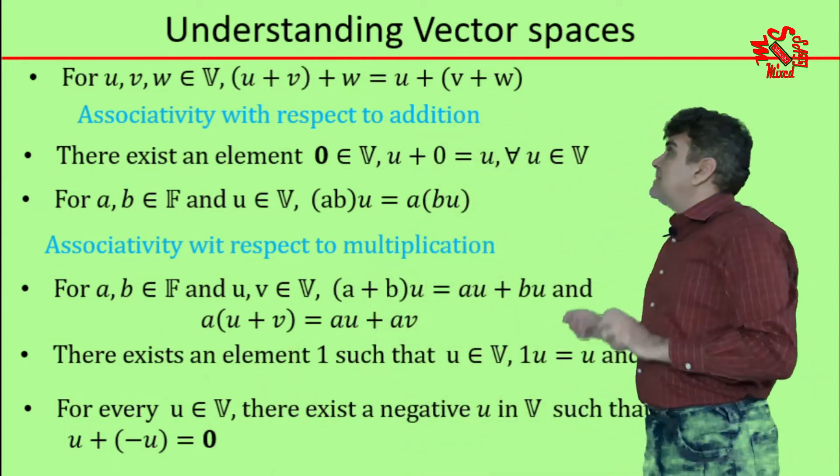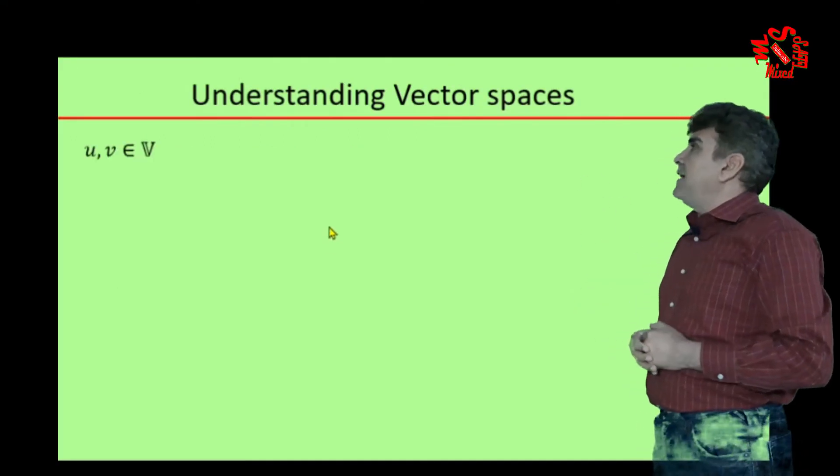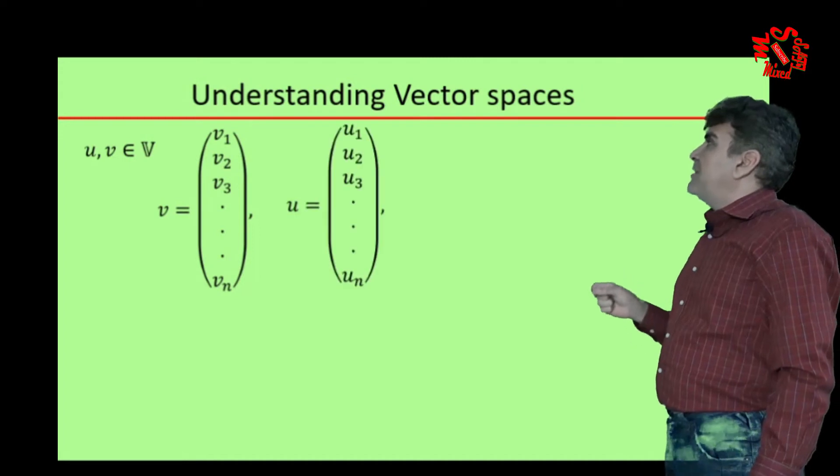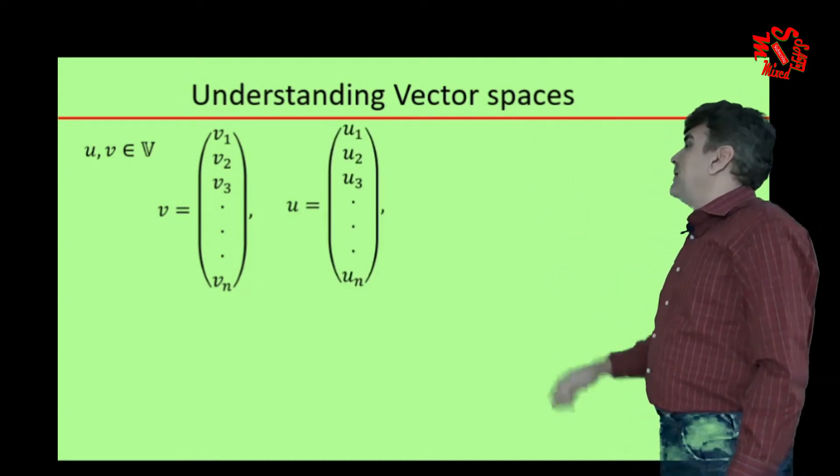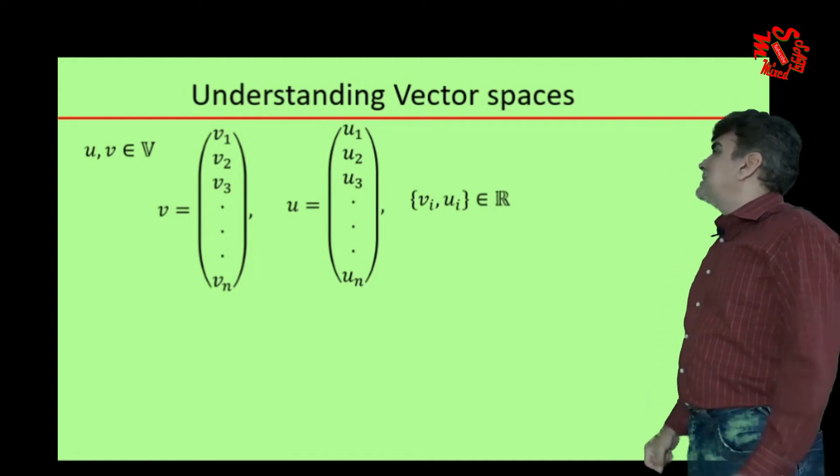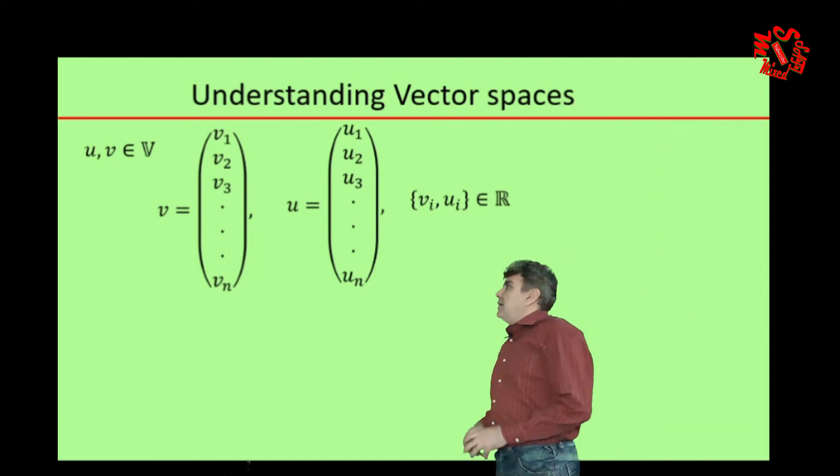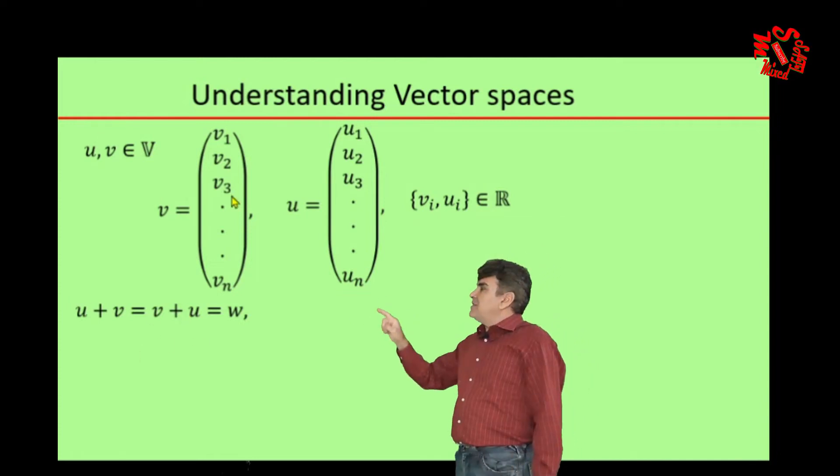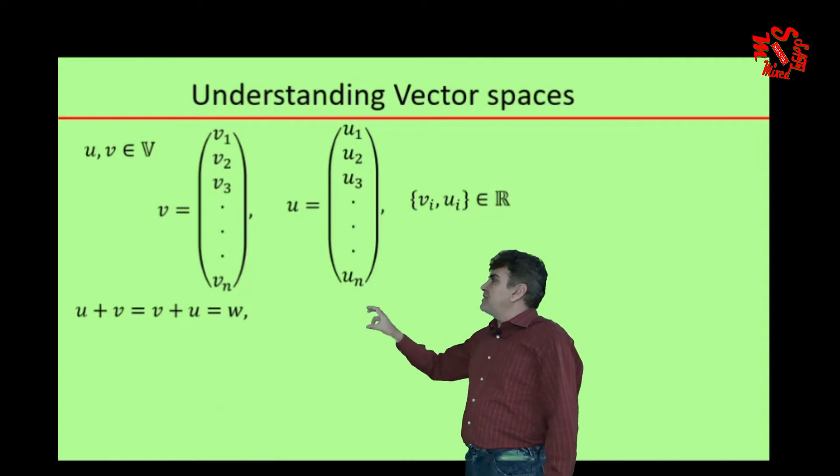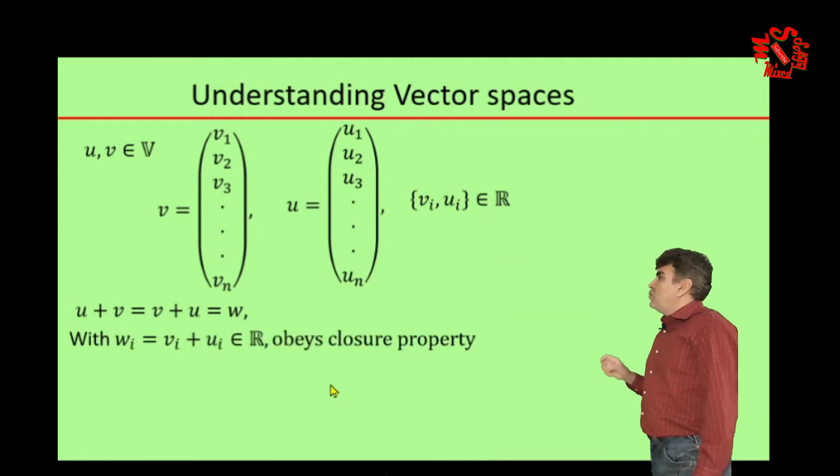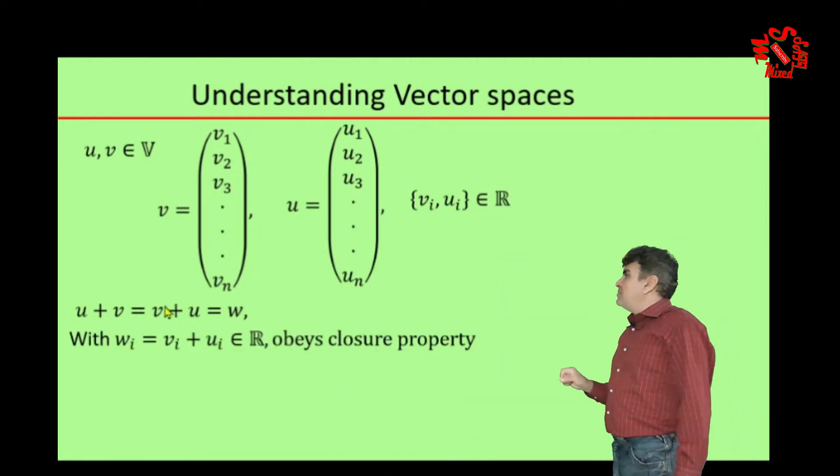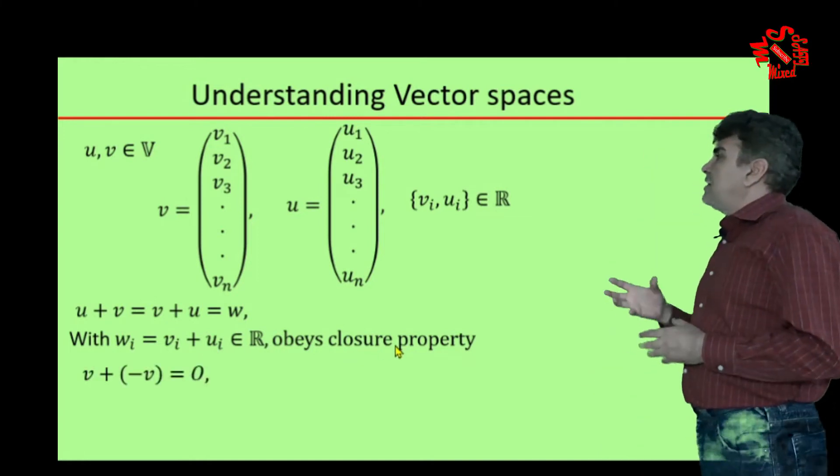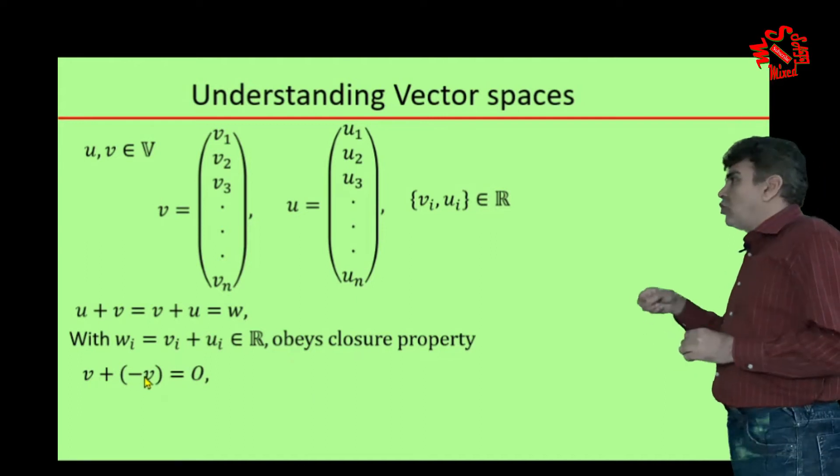And for that purpose, consider that the elements u, v belonging to V are in fact column matrices of n rows with entries v1, v2 up to vn, and similarly u has entries u1, u2 up to un, where ui, vi belong to the set of real numbers R. Now if we take these values of u and v and substitute into this equation u plus v, you can easily prove that it is equal to v plus u, and the sum on both sides gives rise to the same matrix w, where the elements wi of w equal the sum of the corresponding elements vi and ui, and they belong to the set of real numbers R, which means they obey the closure property.